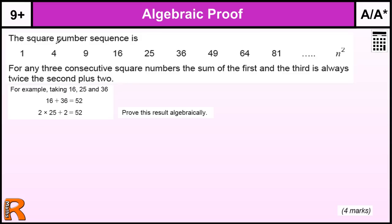Algebraic Proof. Now we'll give a sequence of numbers, square numbers, and given this rule we've got to try and prove that for any three consecutive square numbers the sum of the first and third is always twice the second plus two.